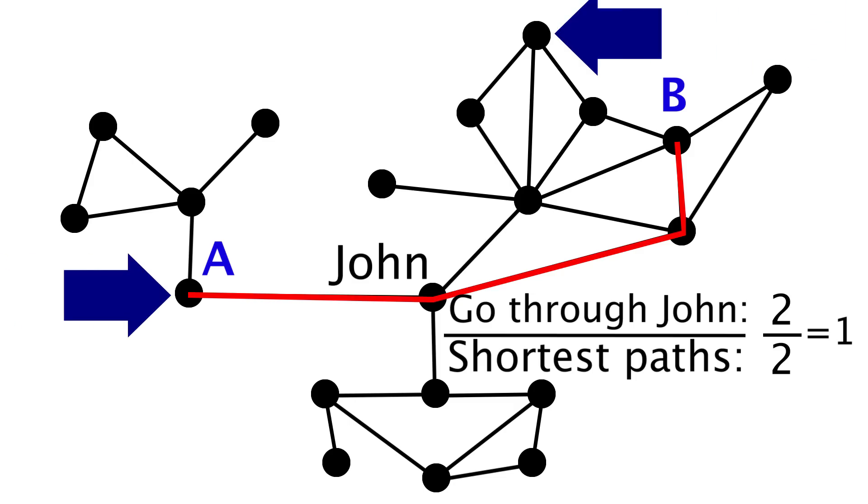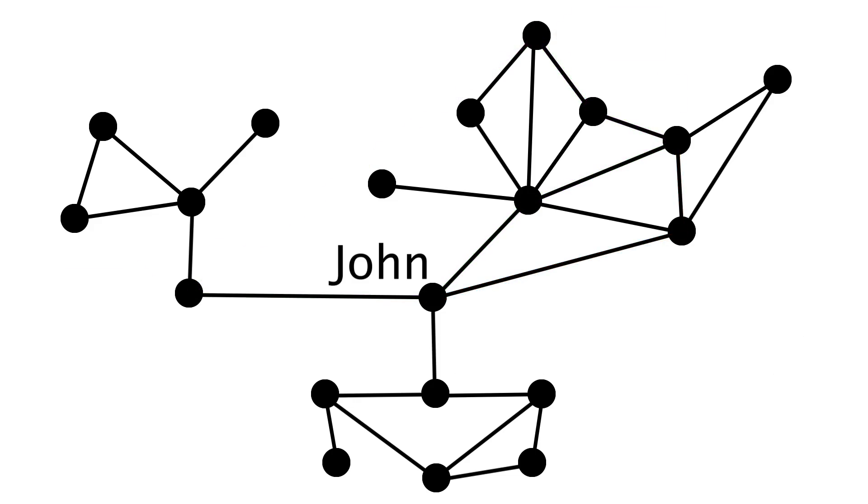But if maybe these two people became friends creating an edge, that would create a third shortest path, also a distance of three. Still only two of those go through John though, so his betweenness score goes down to two thirds, since he's not as required to get a rumor from A to B. If we calculated that value for every single pair of two nodes, finding the shortest paths and how many of those go through John, we'd have John's total betweenness score, which would be higher than anyone else's.